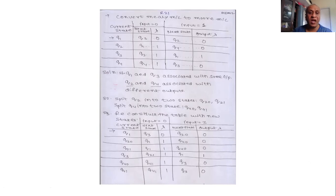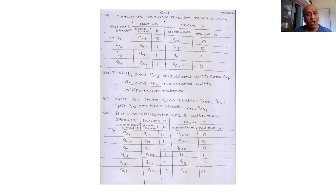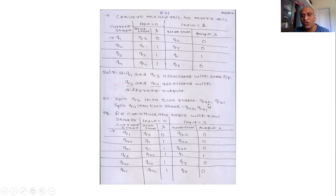Our conversion methodology says we have to split states which are generating different outputs. Q2 and Q4 are generating different outputs, and they are each showing two different outputs. So we create two equivalent states for each: Q2 splits into Q2-0 and Q2-1, and Q4 splits into Q4-0 and Q4-1. The subscripts 0 and 1 reflect the two different outputs each state generates.